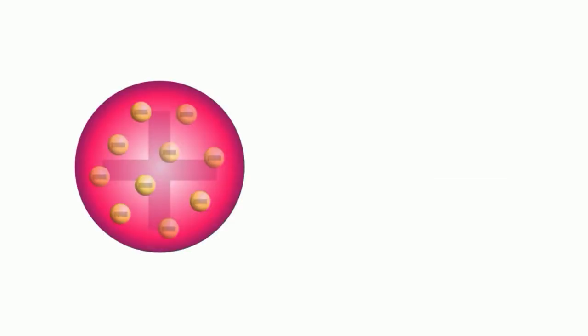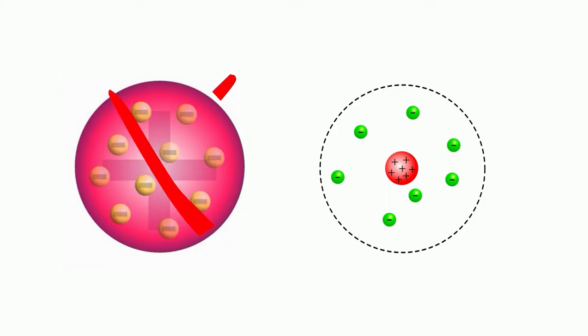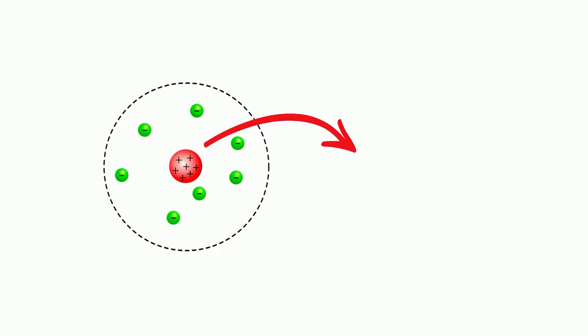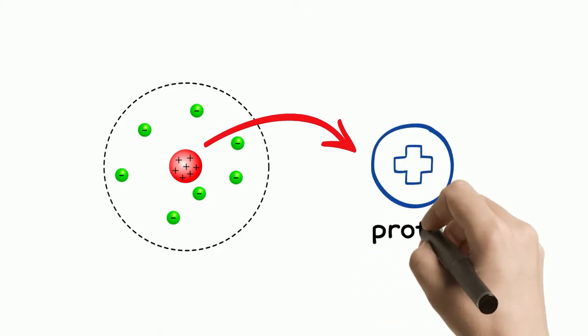From the plum pudding model, which was proven to be wrong, Rutherford proposed the nuclear model that describes the atom as mostly an empty space with a small but massive nucleus. This positively charged particle found in the nucleus is now known as the proton.